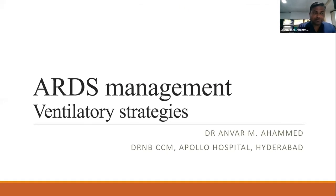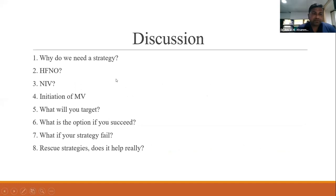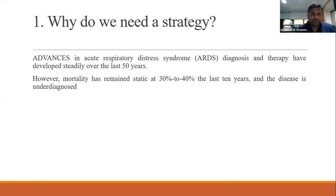My discussion will be based on a few questions: Why do we need a strategy? What are the roles of HFNC or NIV? How will you initiate mechanical ventilation? What is your target? What if you fail? What are the rescue strategies? Advances in ARDS diagnosis and therapy have developed steadily over the last 50 years, but mortality has remained static at 30 to 40 percent in the last 10 years, and the disease is quite underdiagnosed.